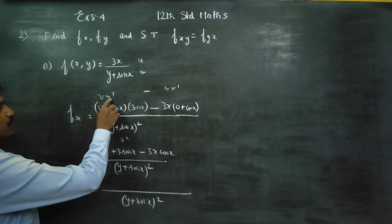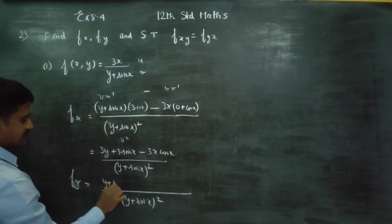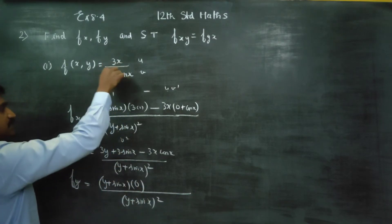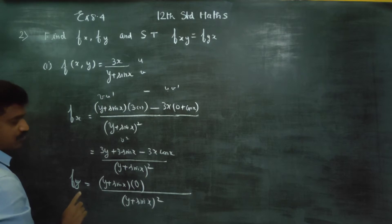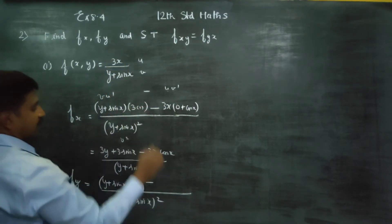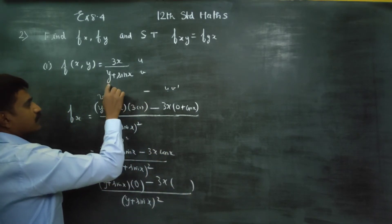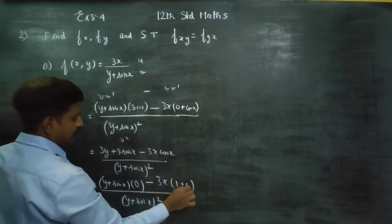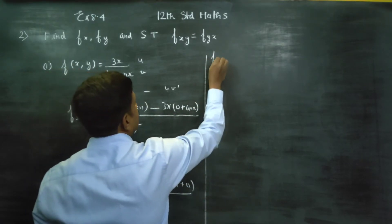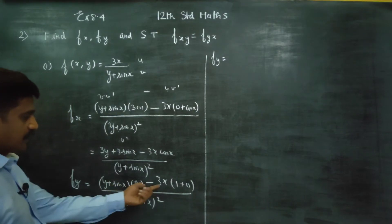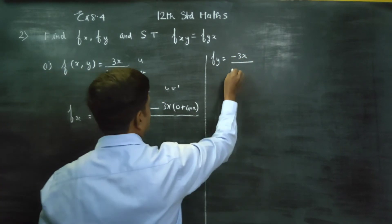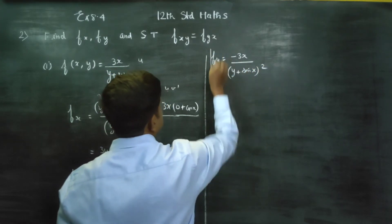v is y plus sin x, so v into u dash: we differentiate the numerator 3x with respect to y, which gives 0 — because this is partial differentiation and x is treated as constant. Minus u, which is 3x, into v dash: differentiating y gives 1, differentiating sin x gives 0 with respect to y. Therefore the answer is 0 minus 3x = minus 3x, divided by (y plus sin x) squared. This is fy.